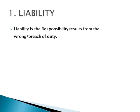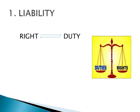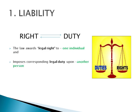Liability is the responsibility resulting from the wrong or breach of duty. To understand liability, we first need to know that law lays down rights and duties on the individuals. Rights and duties are correlatives — it means that where there is a right, there is a duty. When law awards legal rights to one individual, it imposes the corresponding duty upon another person. The right of one is the duty of others.